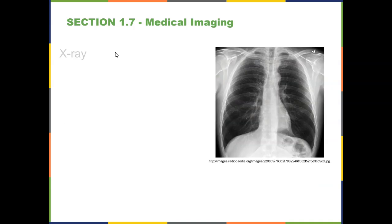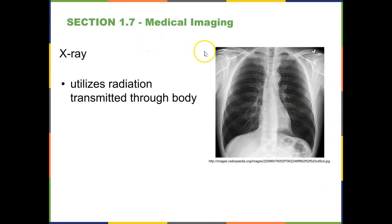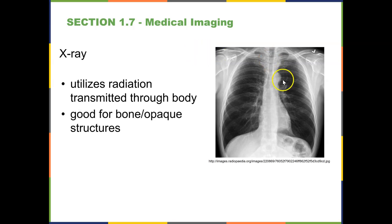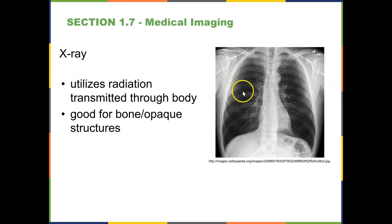The second technique is x-rays. X-rays are very useful for looking at opaque structures such as bone. Anything that is thick or dense shows up as white on the x-ray, and anything that is not dense shows up as darker. X-rays use radiation and shoot still images — not video — for us to look at. For example, here's a chest x-ray where we can see the clavicles, the collarbones, and the ribs.